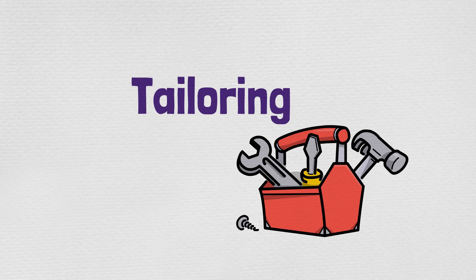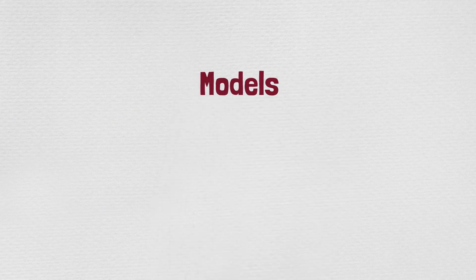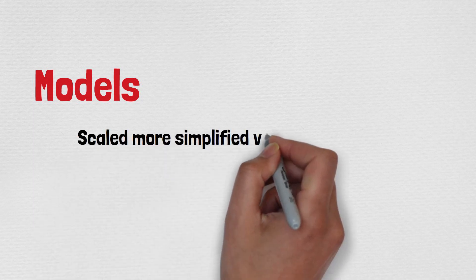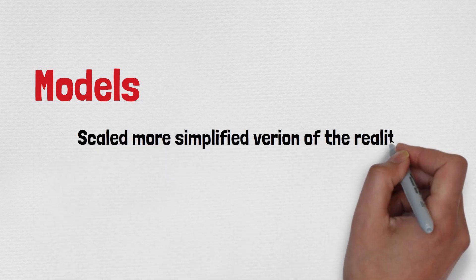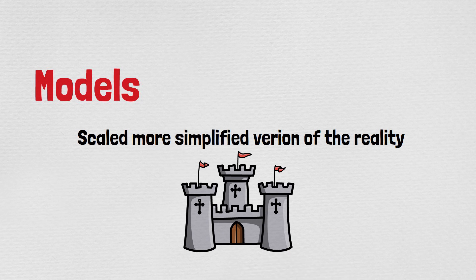In this video, I'll be discussing models, methods, and artifacts — the third area in the new PMBOK 7. Models are small-scale, simplified versions of reality. Examples include leadership models, communication models, change management models, and risk response models. You can create various models for how you will perform your project in the execution stages.